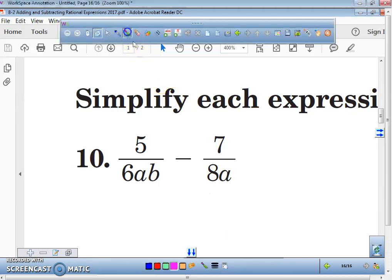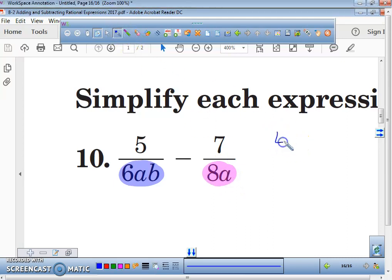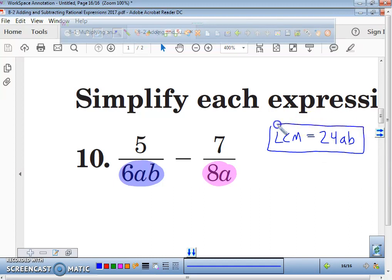Right now, I want you guys to look very carefully at this 6AB and this 8A. We've got to find the least common multiple between 6AB and 8A. We have to find the least common multiple, which is actually going to turn out to be what's called the least common denominator.